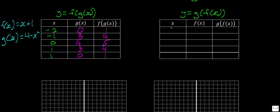For g of f of x, we use the same inputs: negative 2, negative 1, 0, 1, and 2. Since f of x is x plus 1, putting in negative 2 gives negative 1, and we're just getting values 1 greater than the input. Now we take those f of x values into g. Negative 1 squared is 1, so 4 minus 1 is 3. 0 squared is 0, so 4 minus 0 is 4. Putting in 1 gives 3, putting in 2 gives 0, and putting in 3 gives 4 minus 9 which is negative 5.